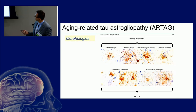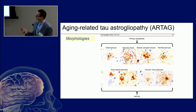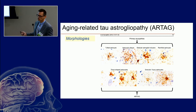These are how the astrocytes look like in the microscope in primary tauopathies like progressive supranuclear palsy or the astrocytic plaque in corticobasal degeneration. The two morphologies we see in the aging brain are called thorn-shaped astrocytes and granular fuzzy astrocytes.